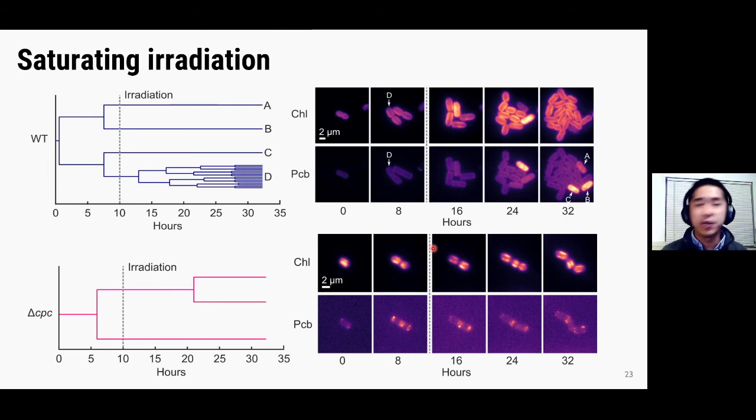So here are the lineage plots for representative colonies in that movie. So for the wild-type cells, you can see that was the colony that I showed you earlier. So basically after irradiation, three of the sisters, A, B, and C, stop growing, and they glow bright in the phycobilisome channel at the end of the movie. But this sister here, D, seems to be fine. It doesn't seem to be affected at all, and just continues to divide. And the same thing here occurs for the delta CPC cells as well. We see examples of this asymmetric survival, where one sister is fine and continues to grow, and one sister seems to have stopped growing.